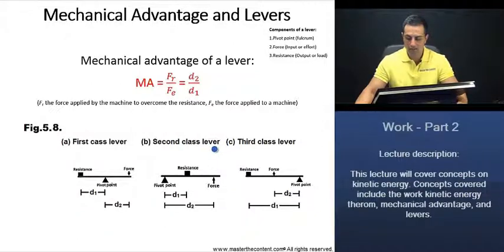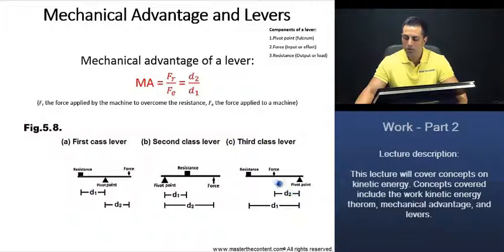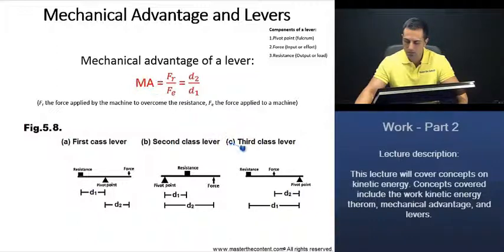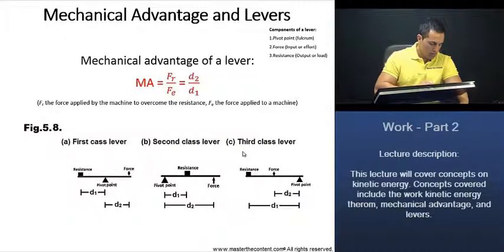In contrast to second class levers, let's look at third class levers and distinguish them from first and second class. Third class levers have the force between the resistance and the pivot point. Since the resistance is farther from the pivot point than the force, D₁ is going to be larger than D₂. Going back to our equation, if D₁ is larger than D₂, then the mechanical advantage for third class levers is going to be less than 1.